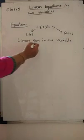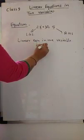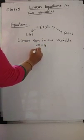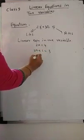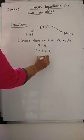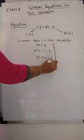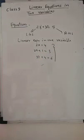You can write so many equations like this. For example: 2x is equal to 4; 2a plus 1 is equal to 3; 3t plus 4 is equal to 6. So many equations you can write. These are all examples of Linear Equations in one variable.